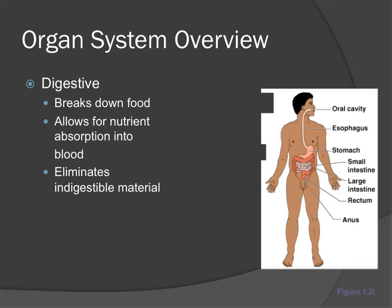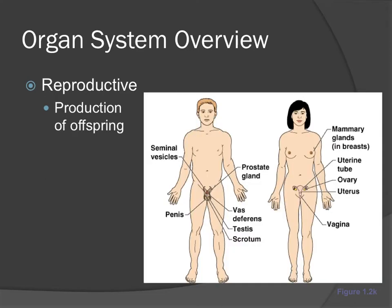The digestive system breaks down food, allows for nutrient absorption into the blood, and eliminates indigestible material. When we eat healthy, we absorb all the nutrients taken in. If we eat unhealthy foods, we eliminate most of it and absorb things like fat and cholesterol rather than nutrients. The reproductive system — the last chapter this semester, chapter 14 — covers the production of offspring.